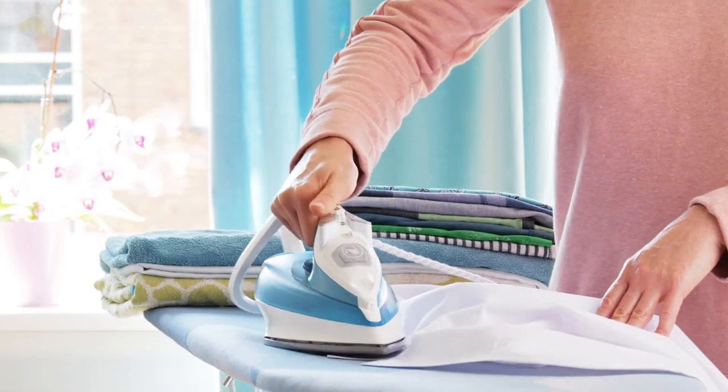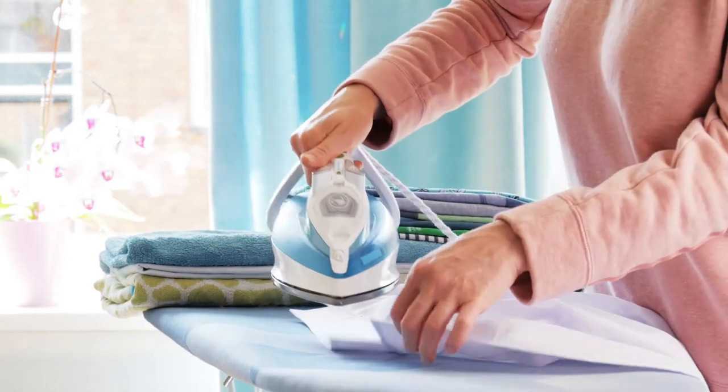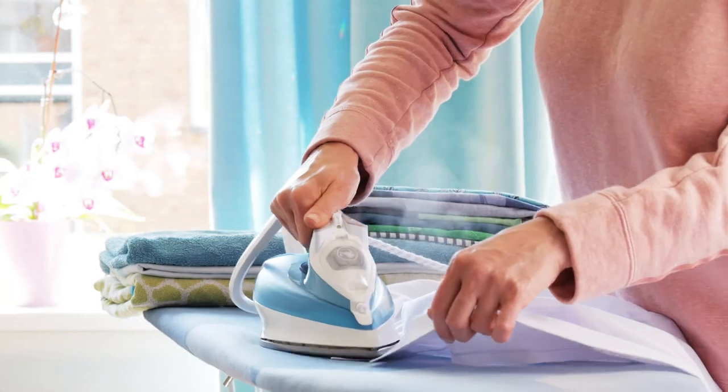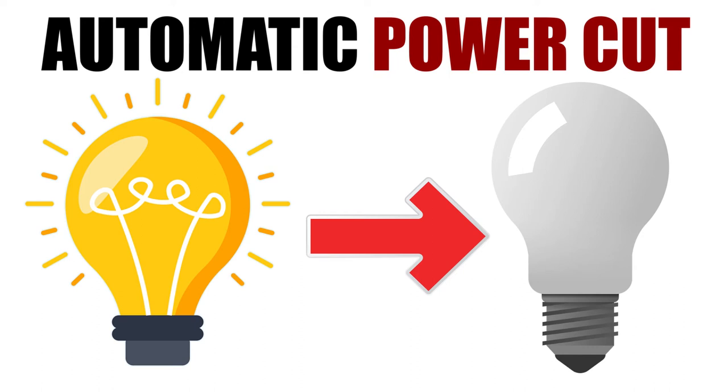When I first learned how to iron my clothes, I was often annoyed when the iron switched on and off of its own accord. I soon realized that it was the automatic power cut function that caused this to happen.